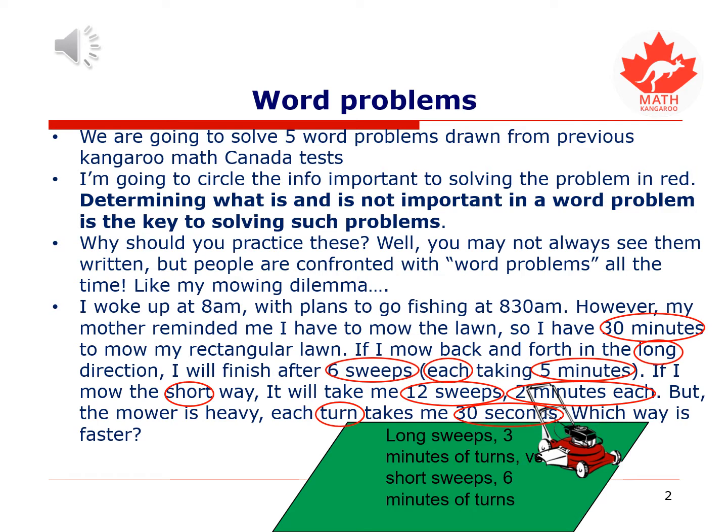If you do the math, you'll figure out that actually, if we take 12 sweeps, it's going to take me another 6 minutes if you account for the turns. So it's going to take me 30 minutes to mow the lawn. But if I do it the other way, it only takes me 3 minutes with the 6 turns, 30 seconds each. So that means I should do it the long way if I want to get to fishing on time.